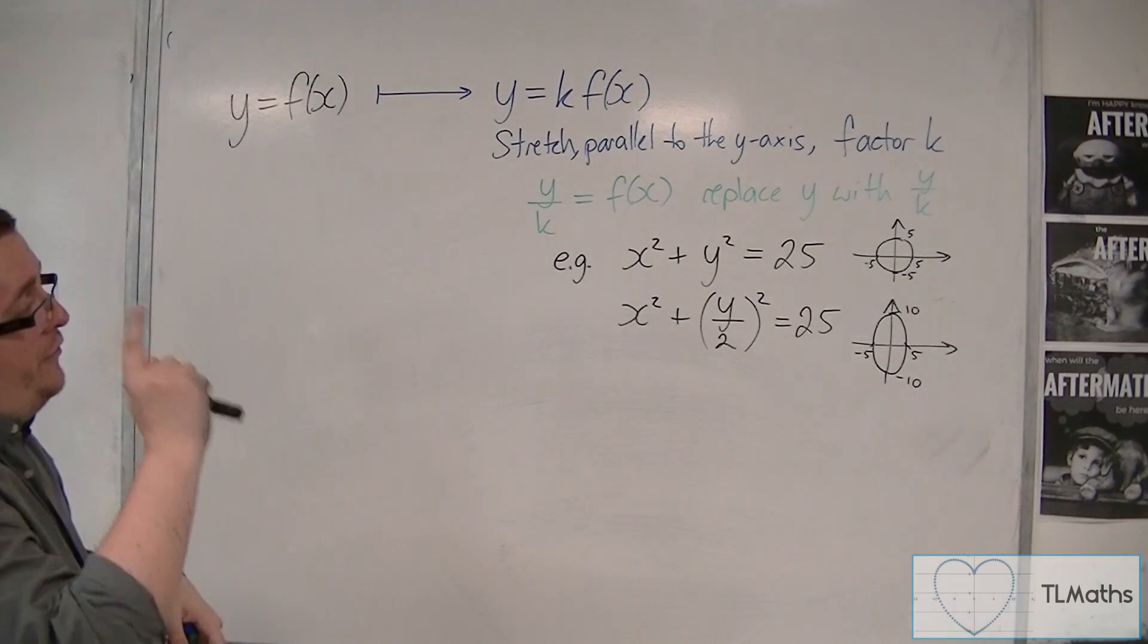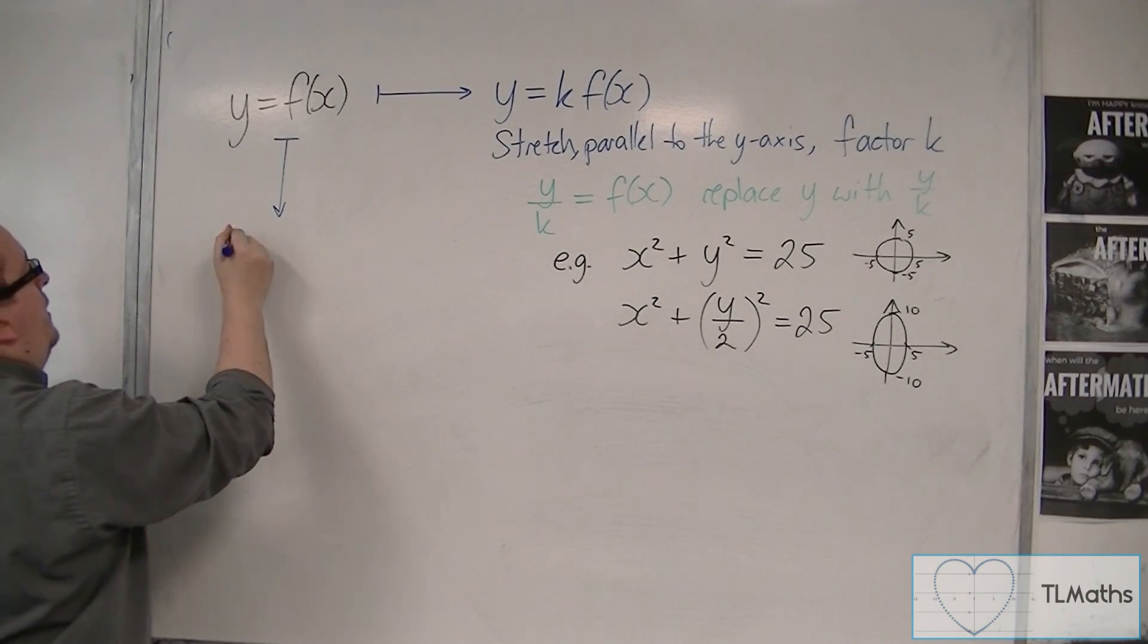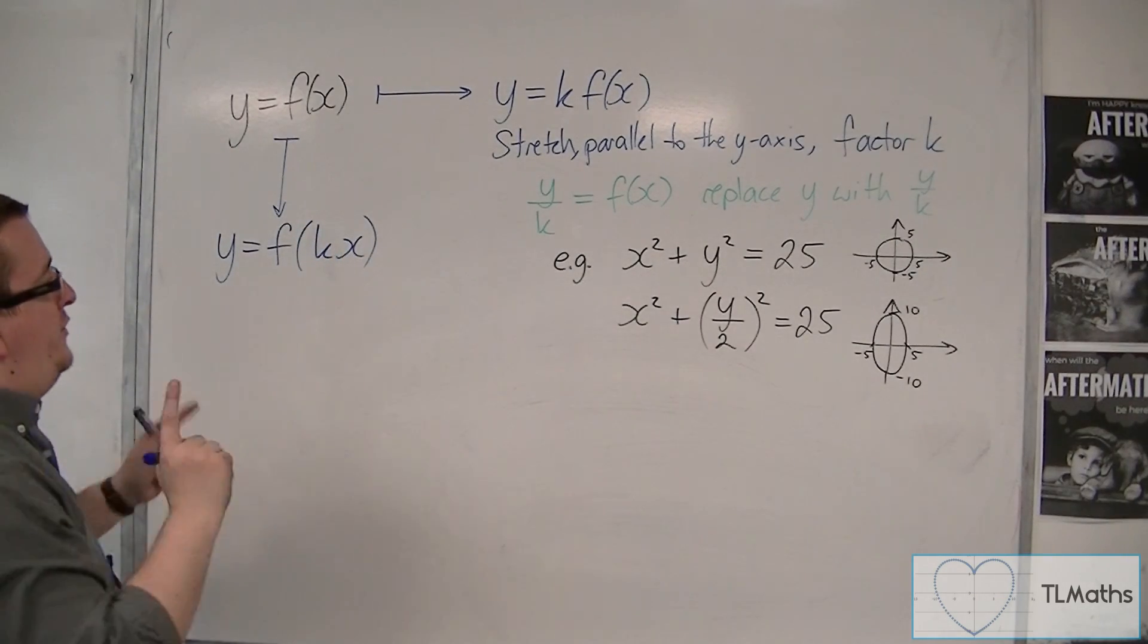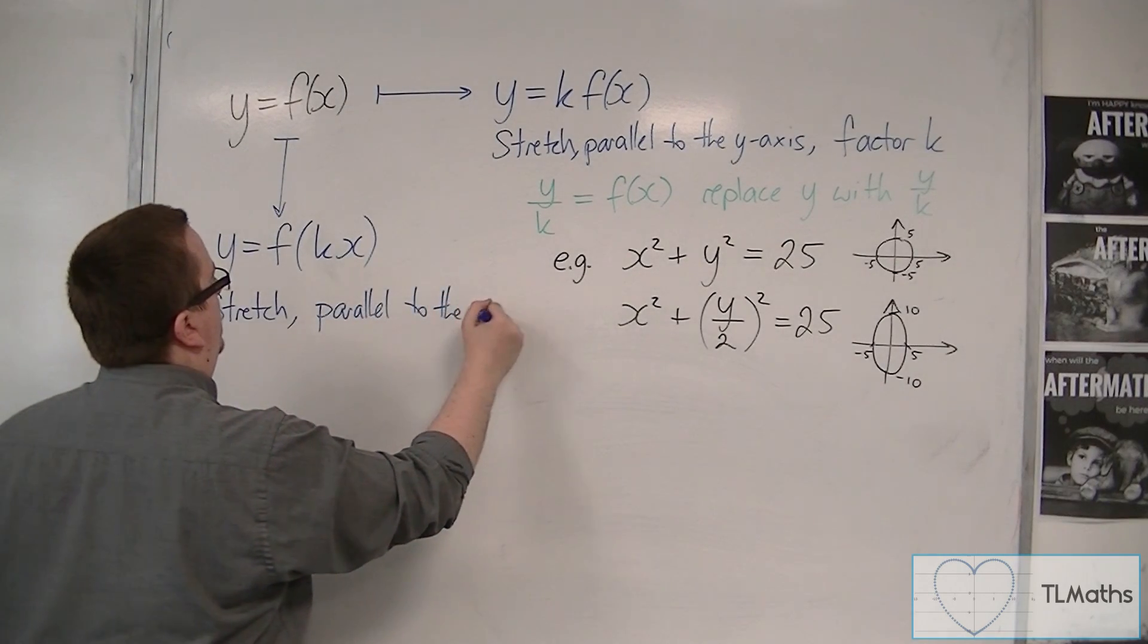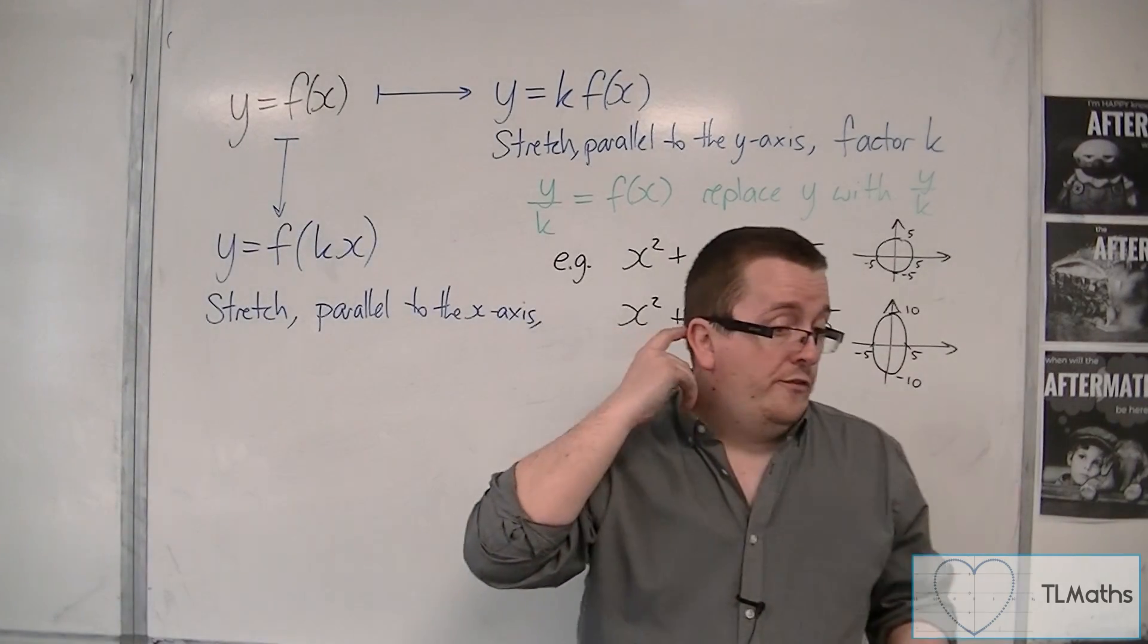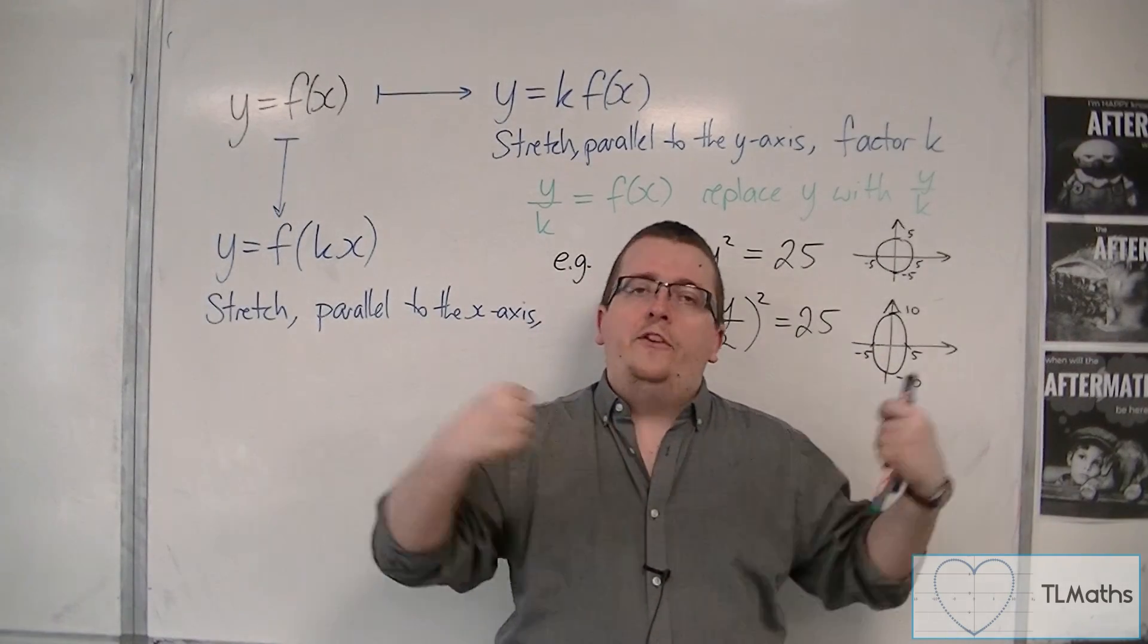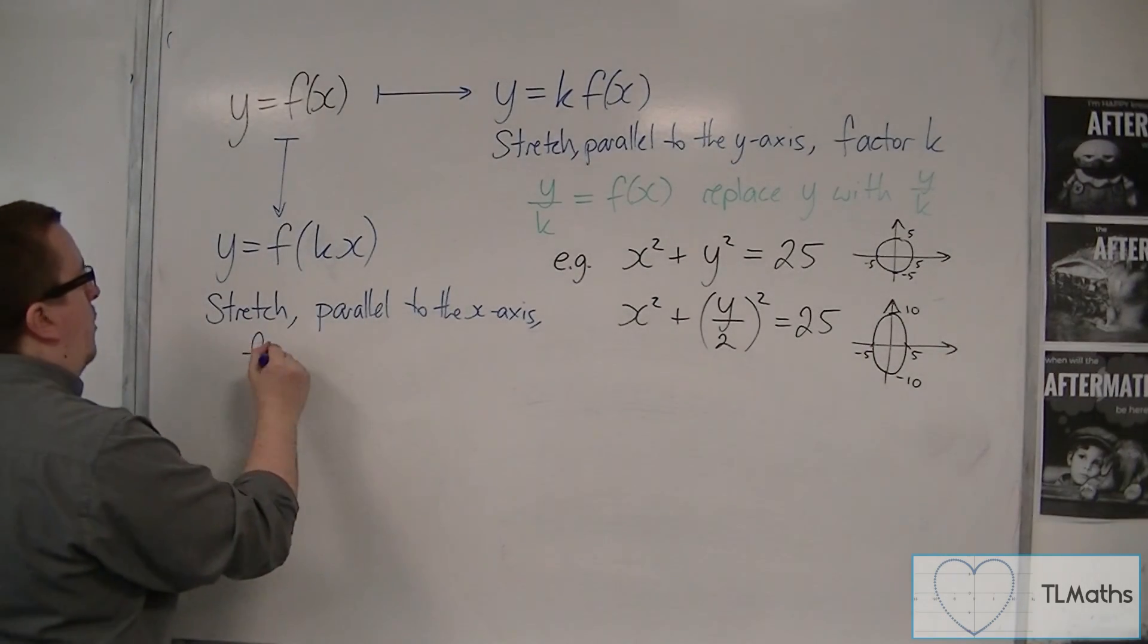Now in the second video on stretches, what we saw was if I put a number in front of the x, so I tried 2 in the video, so let's go with k. We saw this was certainly a stretch, this was parallel to the x-axis, but it's not factor k, because in the video what we found was that the curve when we had 2x stretched inwards towards the y-axis. And so this wasn't factor 2, this was factor 1. So in general, if it's k that's in front of the x, then this is factor 1 over k.